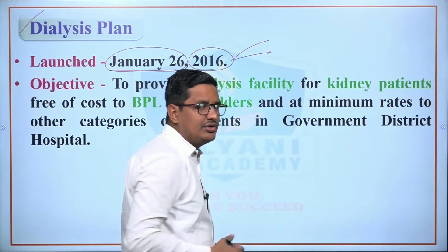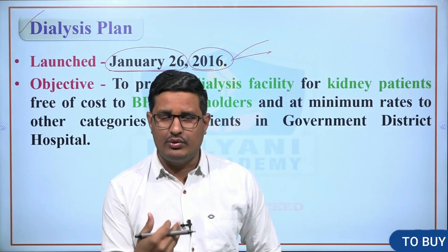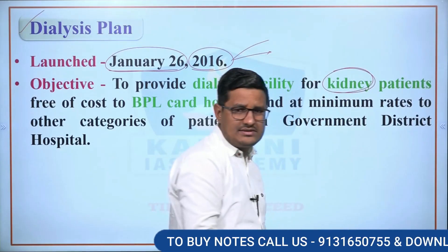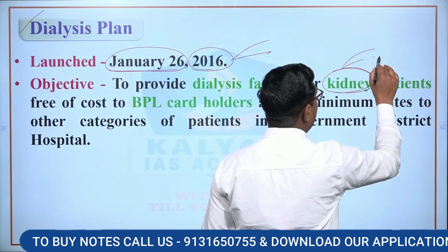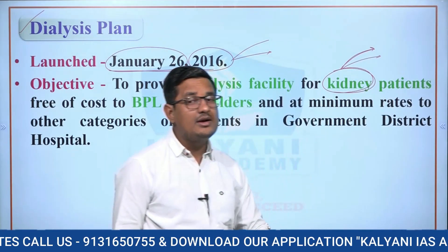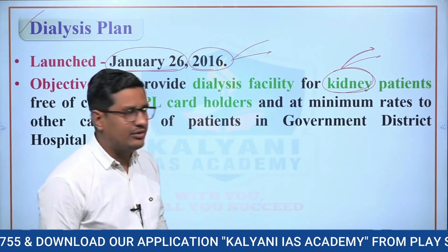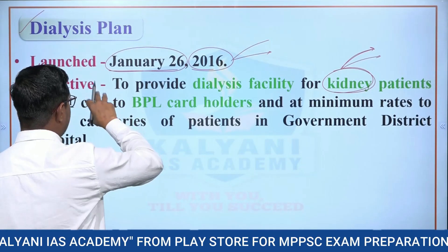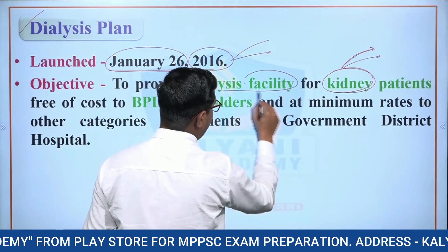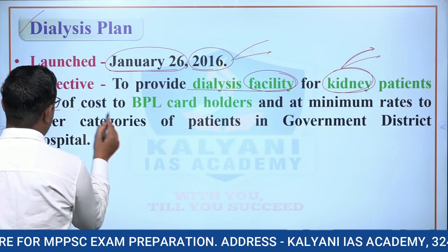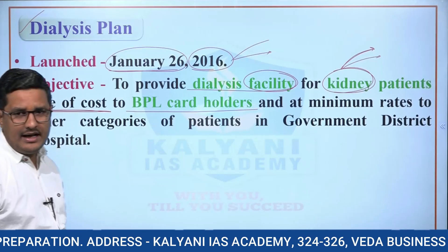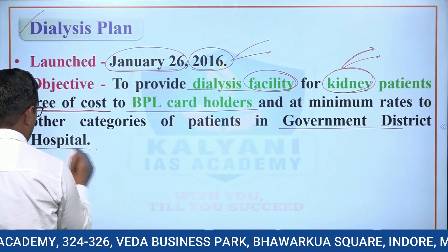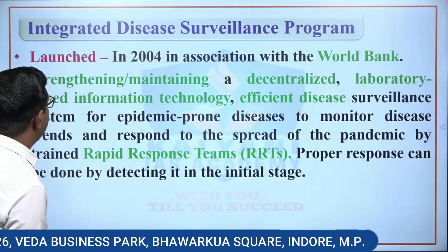The Dialysis Plan was launched on 26th January 2016 to reduce the expenditure incurred on dialysis for patients. Under this scheme, dialysis facility is provided for kidney patients — free of cost to BPL card holders, and at minimum rates for other category patients — at government district hospitals.